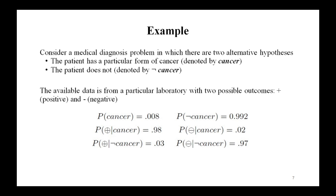Now consider an example to illustrate the Bayes rule. Consider a medical diagnosis problem with two alternative hypotheses: the patient has a particular form of cancer, or the patient does not have the cancer. The available data is from a laboratory test with two outcomes: positive (+) or negative (−). The test returns a correct positive result in 98% of cases where the disease is actually present, and a correct negative result in 97% of cases where the disease is not present.